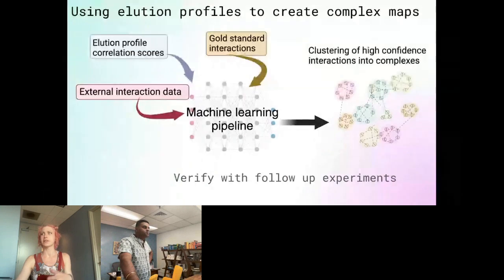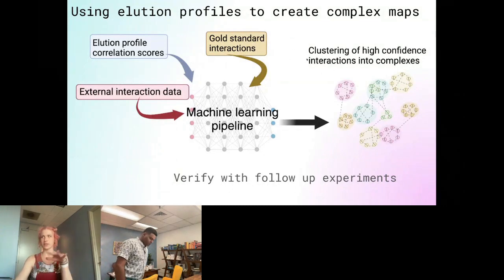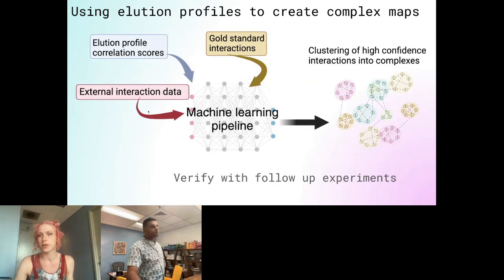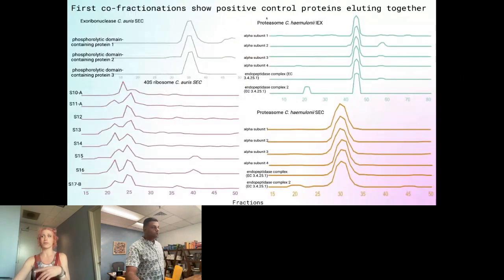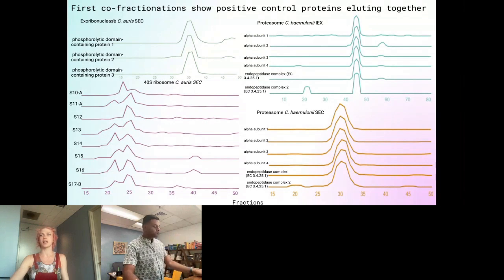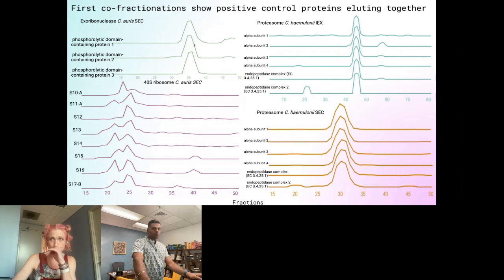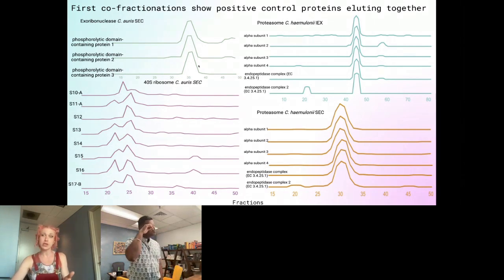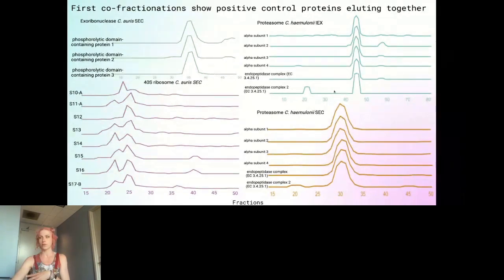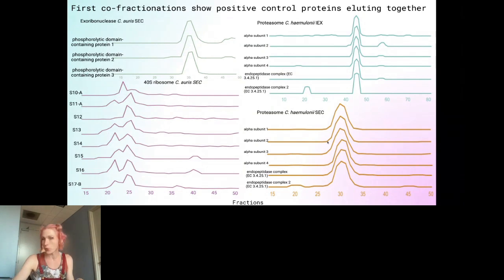We take the correlation scores, external interaction data, and gold standard interactions and put them into a machine learning pipeline. We cluster high-confidence interactions into complexes and then verify with follow-up experiments. As a positive control, we can see highly conserved predicted proteins of Candida auris eluting together — the exoribonuclease with its subunits, the 40S ribosome subunits, and the proteasome in Candida haemulonii. We can use these highly conserved proteins as gold standard interactions to train our machine learning algorithms and start characterizing under-annotated proteins.